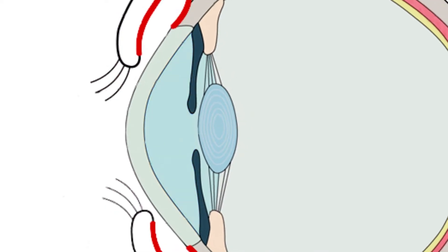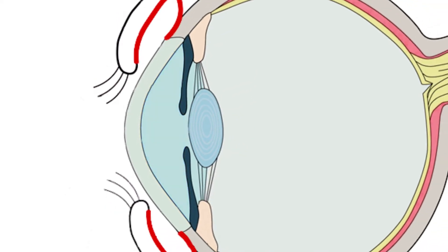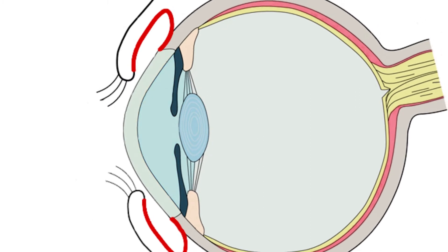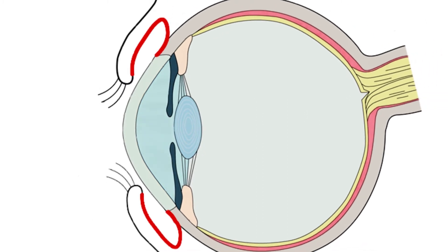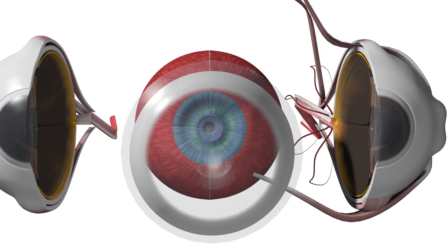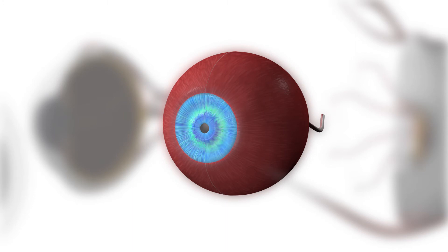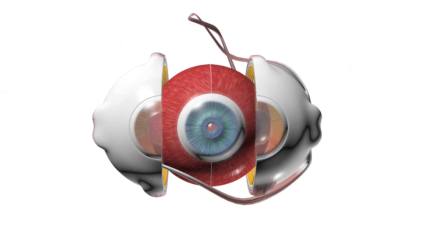Anterior chamber: the space that lies between the cornea anteriorly and the iris posteriorly. The chamber contains a watery fluid called aqueous humour. Iris: the coloured part of the eye that screens out light, primarily via the pigment epithelium which lines its posterior surface.